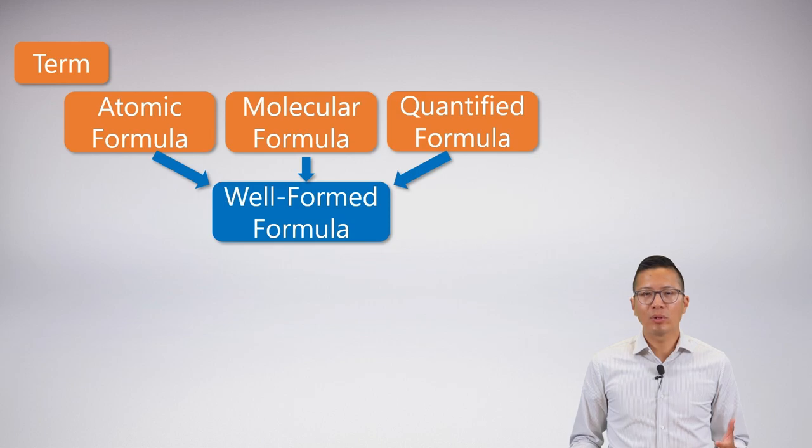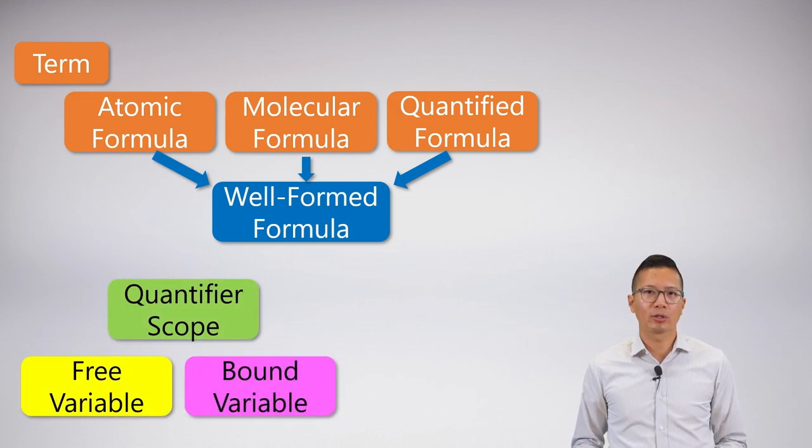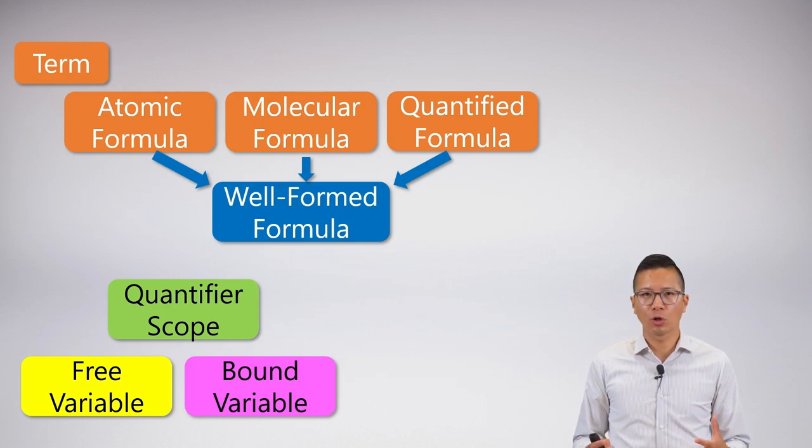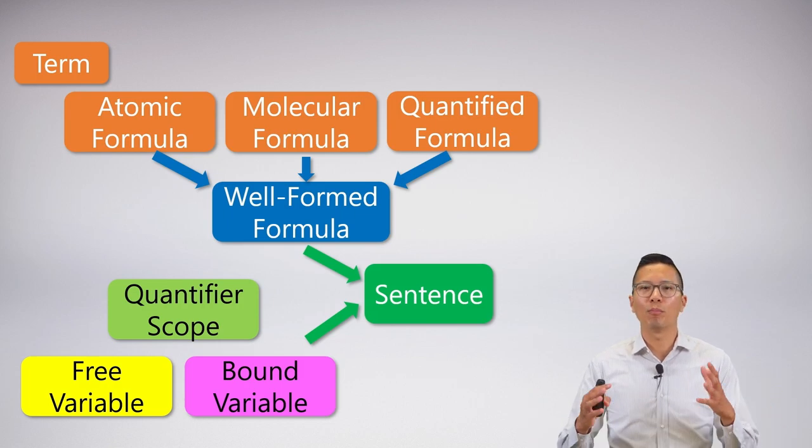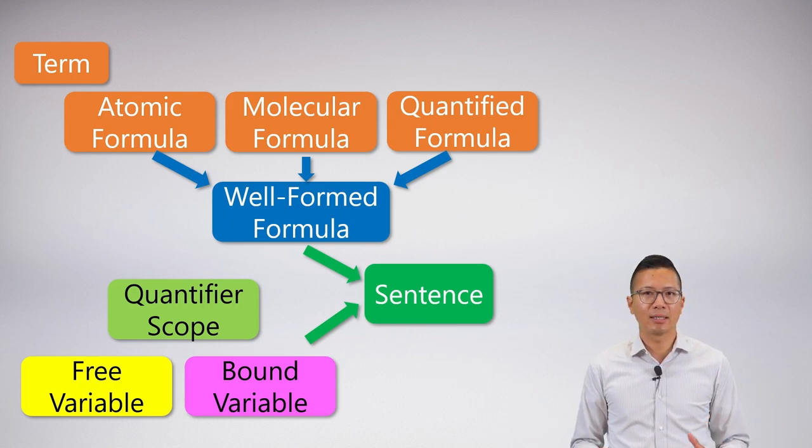We also needed to really understand our newest and most important operator, which are our quantifiers. We talked about quantifier scope and the difference between a free and a bound variable. And this was really important because remember, our goal in symbolizing is to generate sentences, so nothing that contains any free variables.